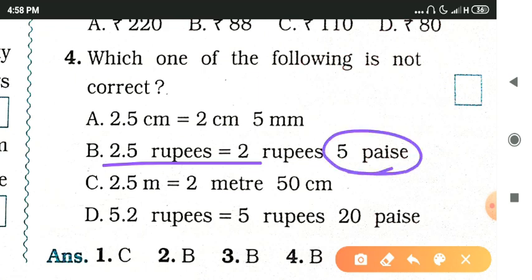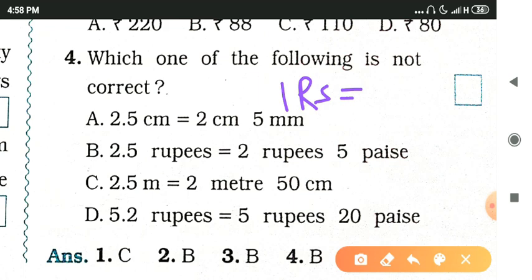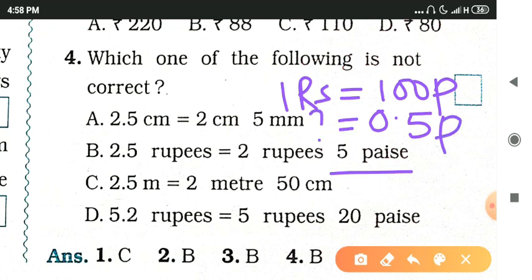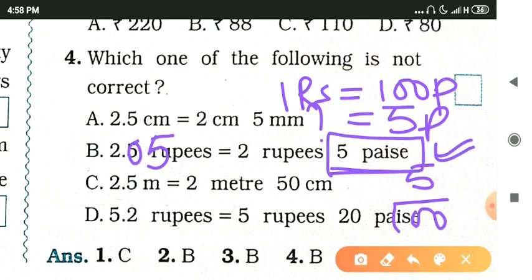Looking further: 5 mm should be 50 mm in that context, making that expression wrong. Similarly, 0.5 rupees equals 50 paise — working it out: 5 upon 100 gives 0.05, so 2.05 would be correct, not 2.5. The third option, 2.5 meters equals 2 meters 50 centimeters, is correct since 1 meter equals 100 centimeters.